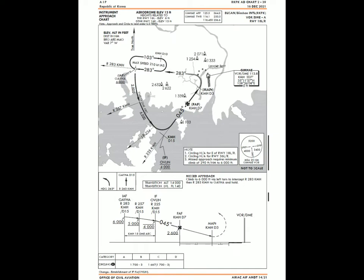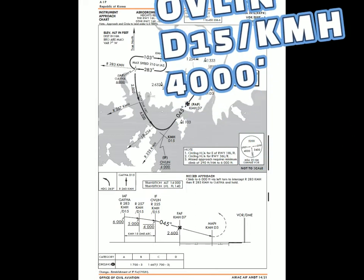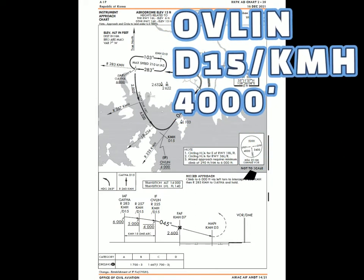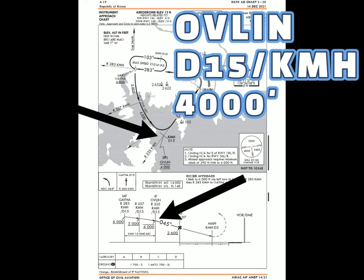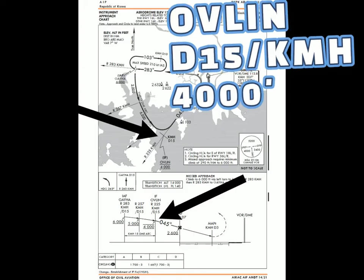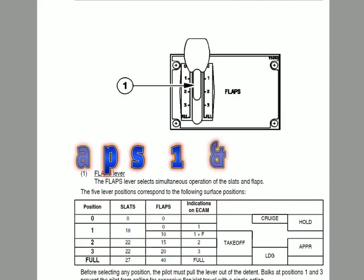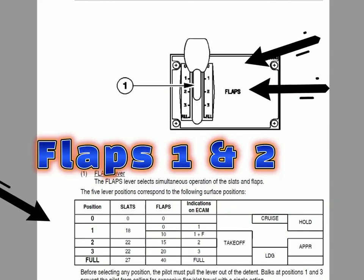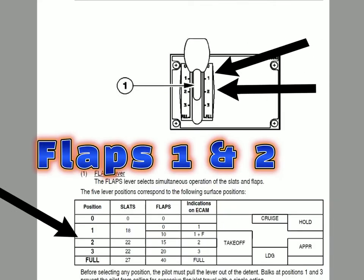Normally, ATC gives radar heading to join the final approach course inbound on the 045 radial of KMH. Sometimes, direct OVLIN is given. OVLIN is 15 DME KMH. Crossing altitude at OVLIN is 4,000 feet. I usually extend flaps 1 and 2 before reaching OVLIN.